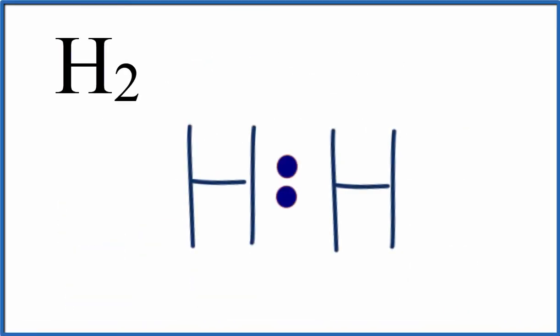So you can see here that with the Lewis structure, we only have a pair of electrons that's shared between the hydrogen. That's because each hydrogen is in group one, and hydrogen only has one valence electron.